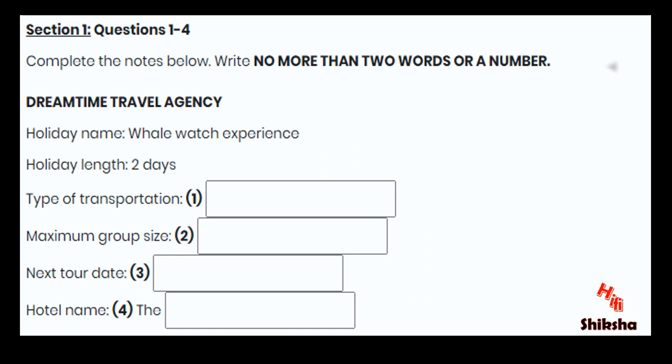You will see that there is an example which has been done for you. On this occasion only, the conversation relating to this will be played first. Oh, that's our Whale Watch Experience. It's very popular, and it's based in a lovely little town with nice beaches. The holiday is called Whale Watch Experience, so Whale Watch Experience has been written on the form.